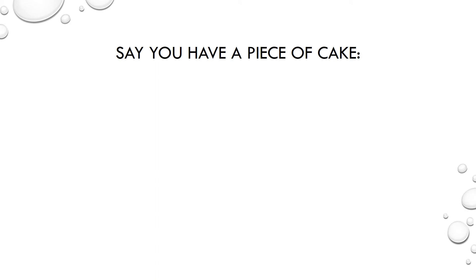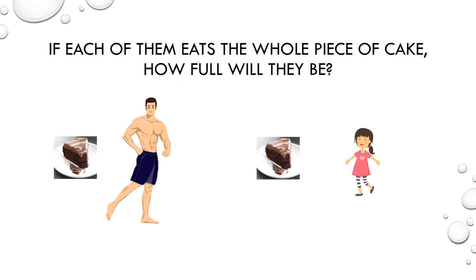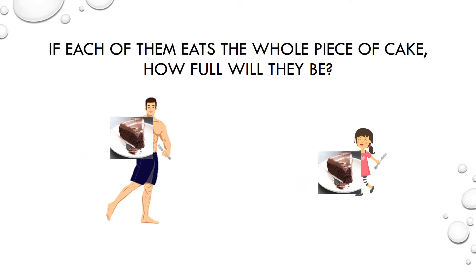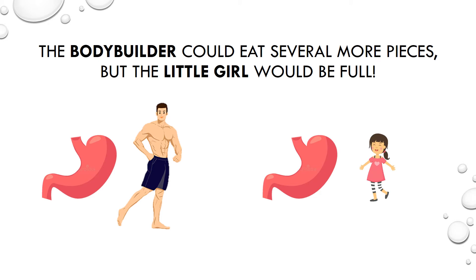So say you have a piece of cake, and a bodybuilder, and a little girl. You could easily say that these two have very different stomach sizes. Now, if each of them were to eat the same whole piece of cake, how full do you think they would be? Probably not the same. The bodybuilder could eat several more slices of cake, but the little girl would be full after that same slice. The bodybuilder and the little girl have different capacities for cake.